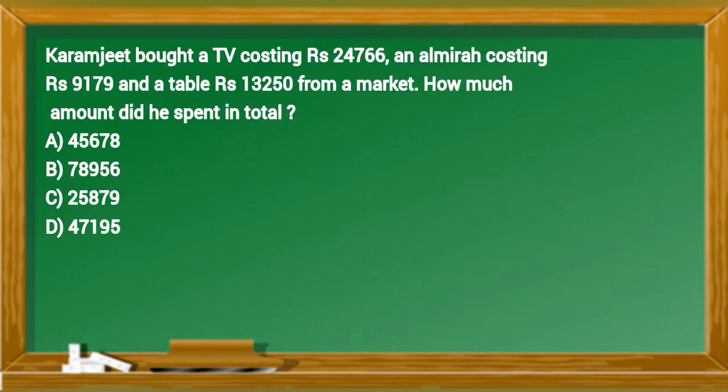Karamjit bought a TV costing 24,766 rupees, an Almira costing 9,179 rupees and a table 13,250 rupees from a market. How much amount did he spend in total?